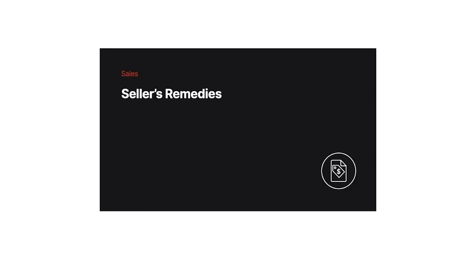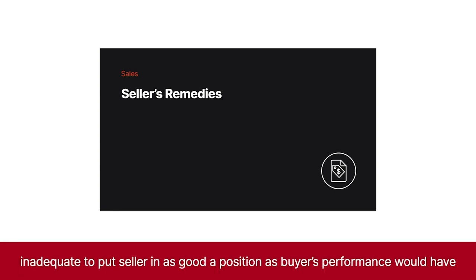In another lesson, we learned about the seller's principal remedy and the default measure of damages under Article 2. However, in certain circumstances, those remedies may be inadequate to put the seller in as good a position as the buyer's performance would have.